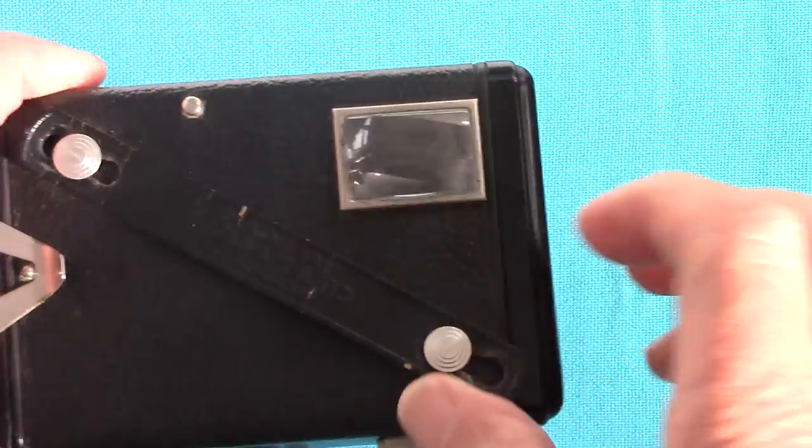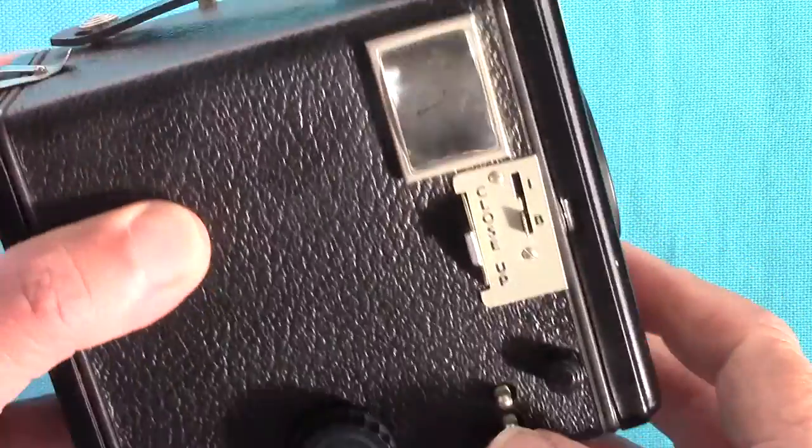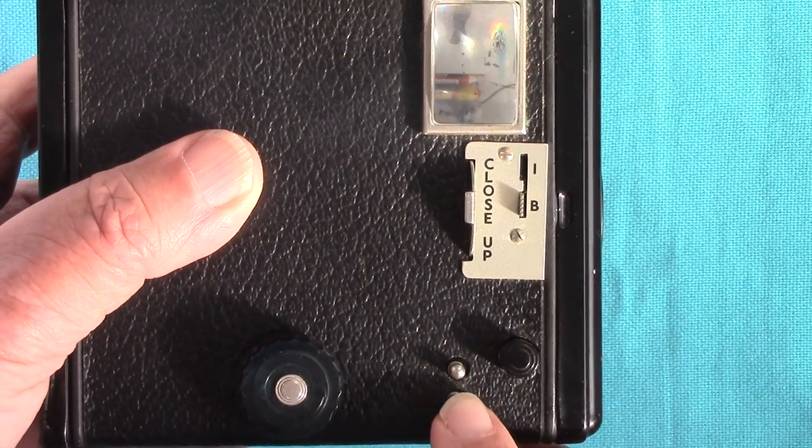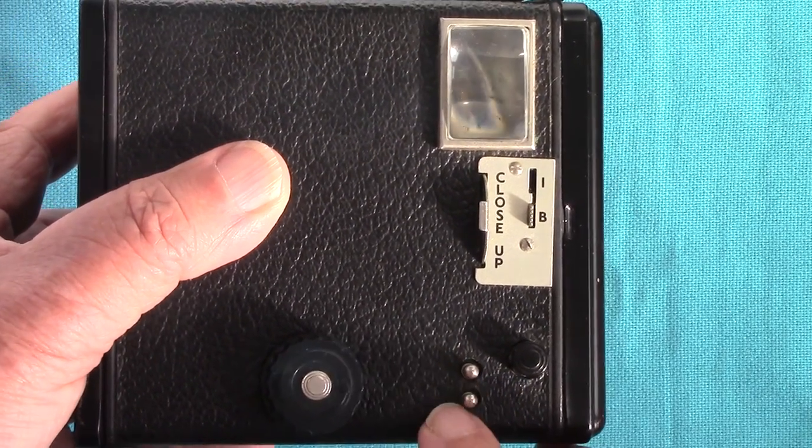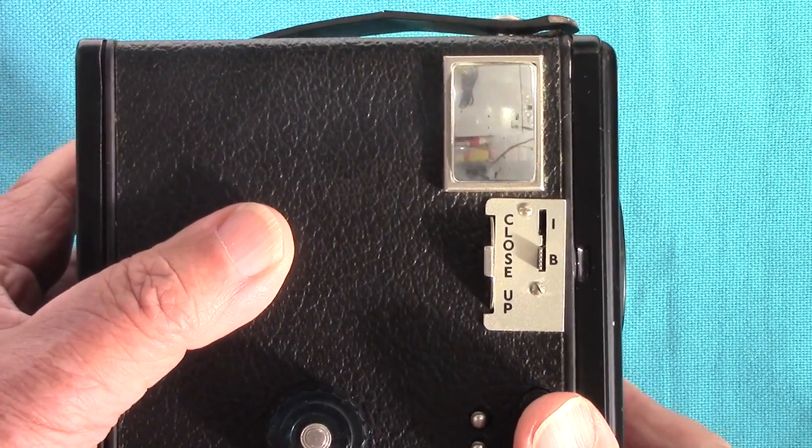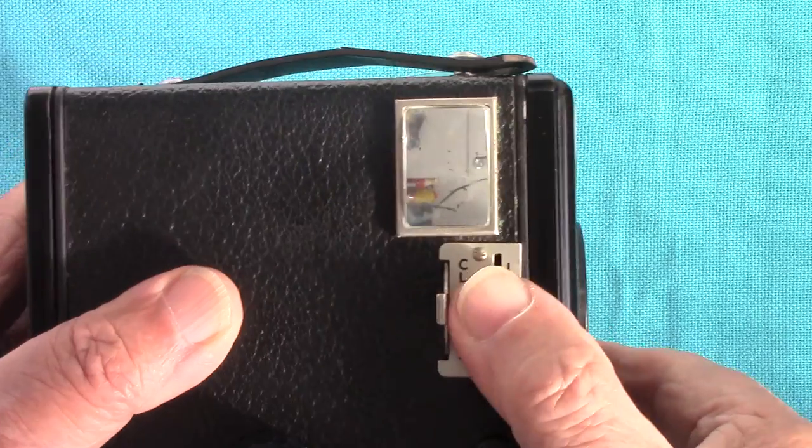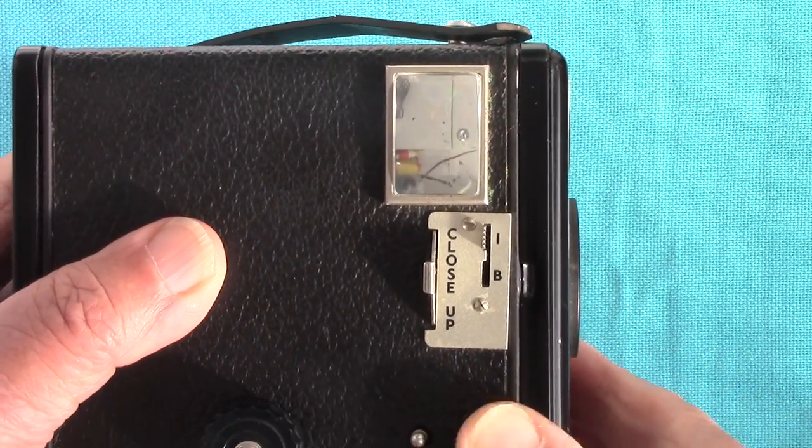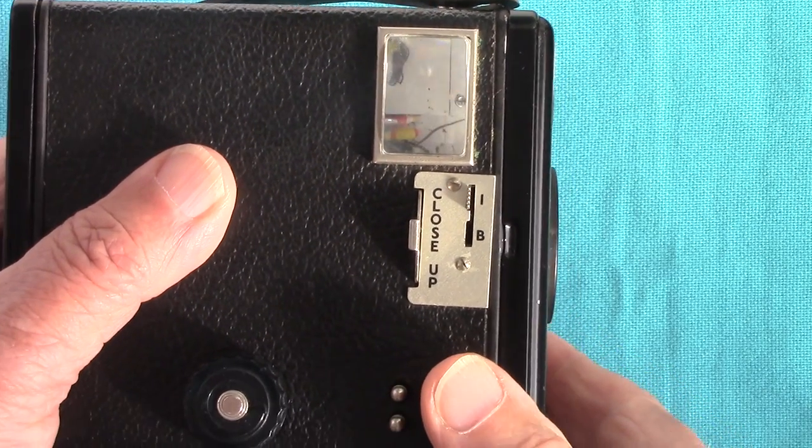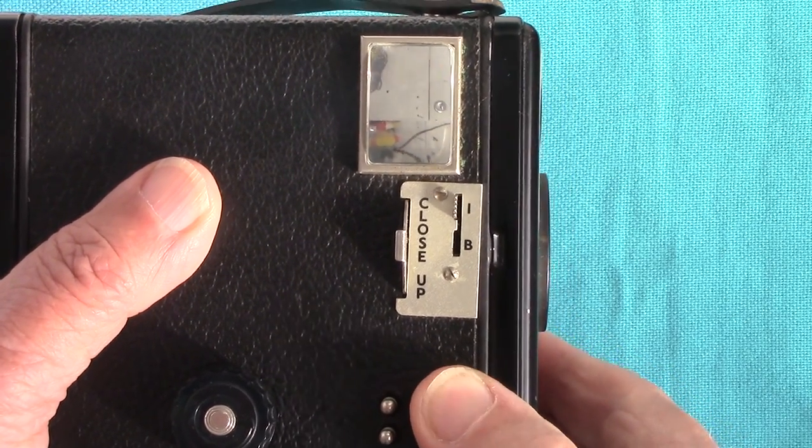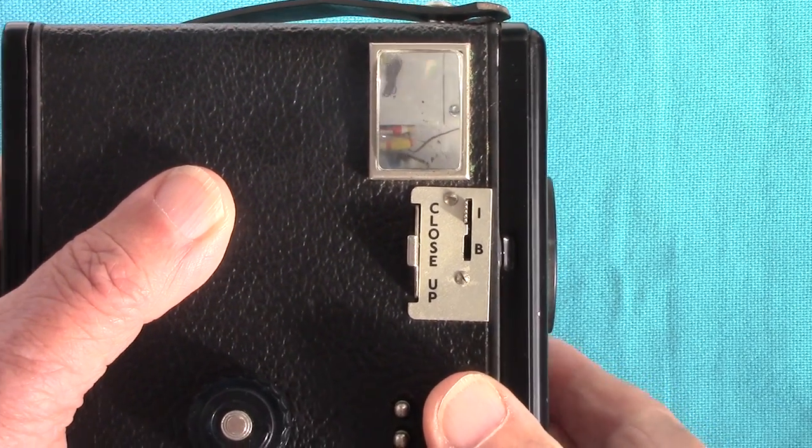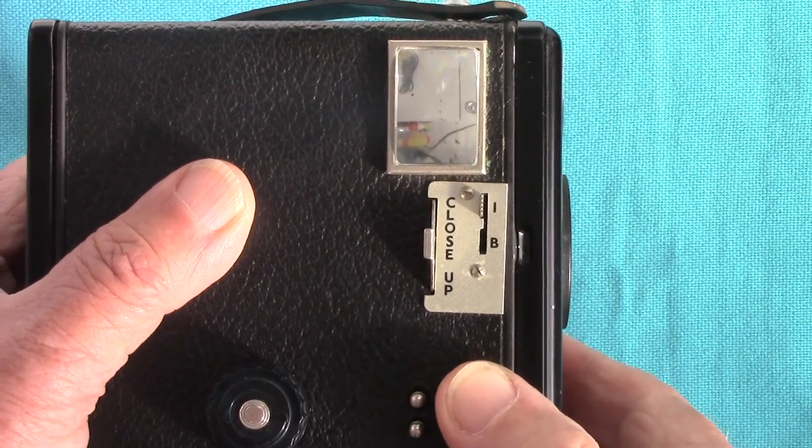There's a carrying handle and flash contacts here, but I've never used them because I haven't got a flash gun which fits. This is the infamous shutter release. We put it onto instantaneous, and every time you press it it goes, so you must remember to wind it on otherwise you get double exposures.